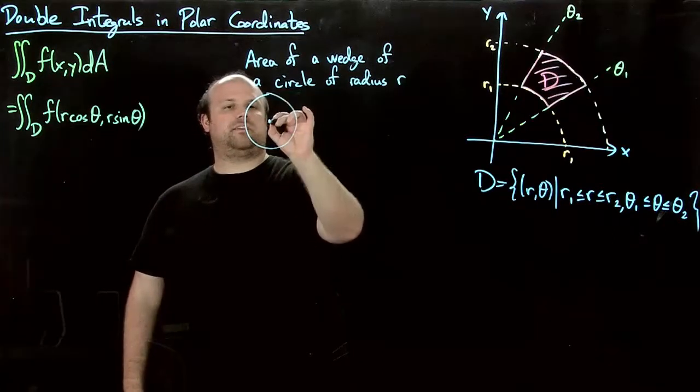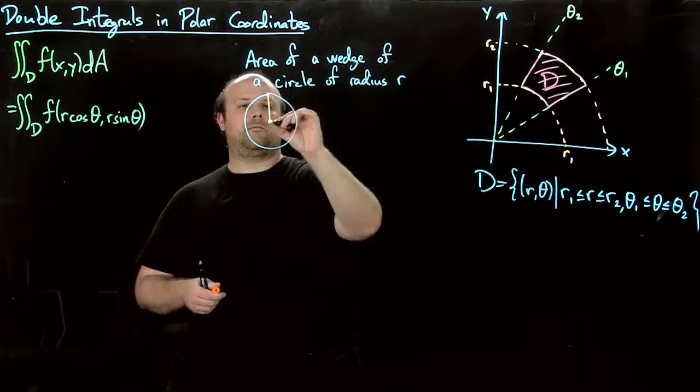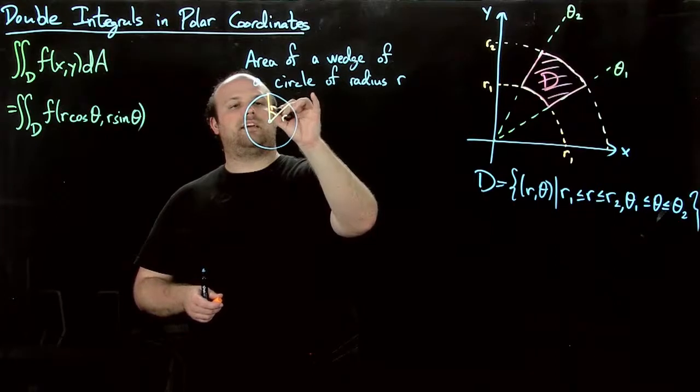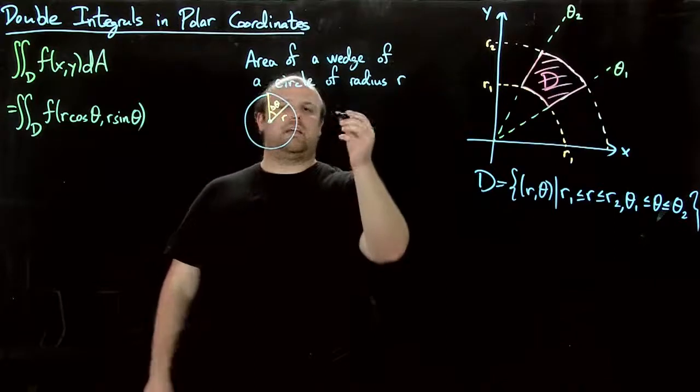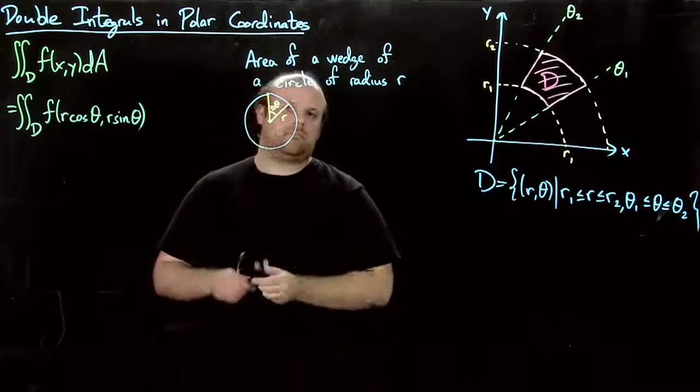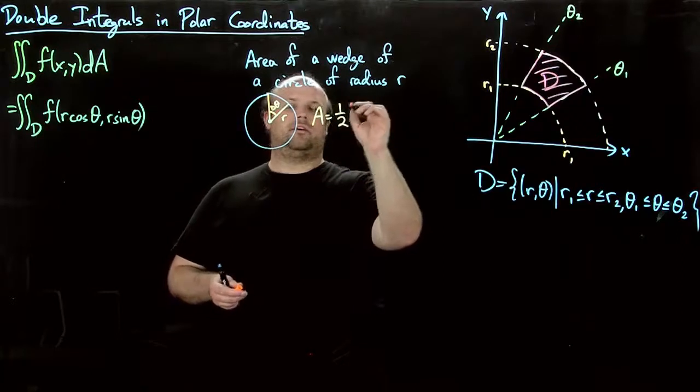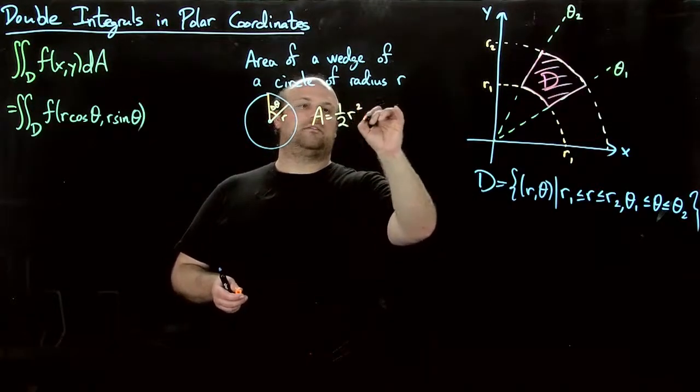We're talking about something like this. All right. This is radius r, and I want to say the angle in here is delta theta. Then the area is one-half r squared delta theta.